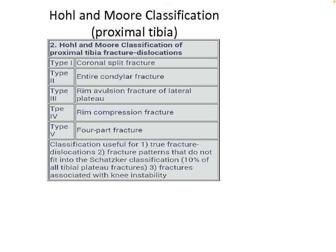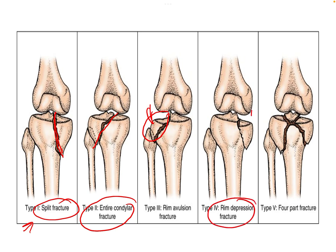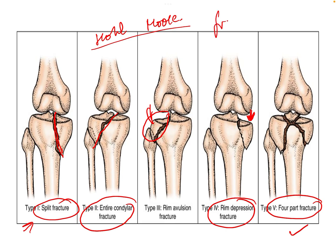Another classification used for fracture dislocation of the proximal tibia is the Hall and Mohr classification, which classifies fractures into 5 types. Type 1 is a coronal split fracture. Type 2 is an entire condyle fracture, where the entire lateral condyle is fractured. Type 3 is an avulsion fracture of the lateral condyle. Type 4 involves depression at the fracture site with depression of the articular surface. Type 5 is a four-part fracture. This classification is less commonly used and applies to fracture dislocation of the proximal tibia.